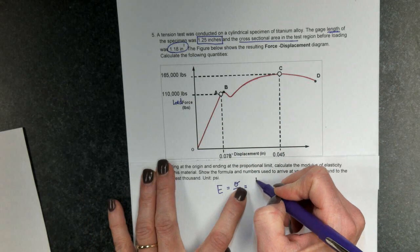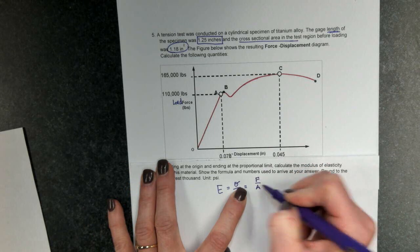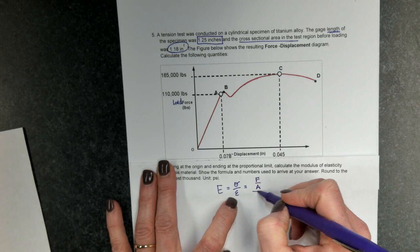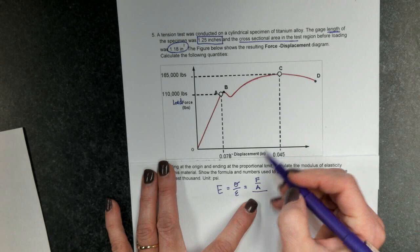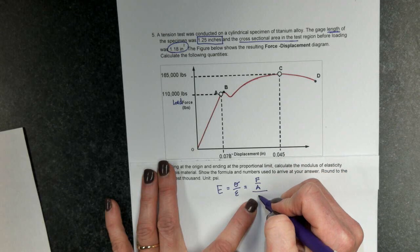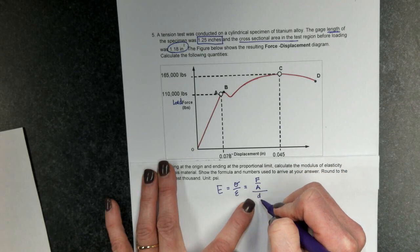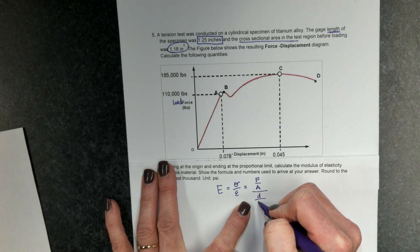So, to get the stress, I have to do force divided by area. And then to get the strain, I have to do the change in length, or the displacement, divided by the original length.